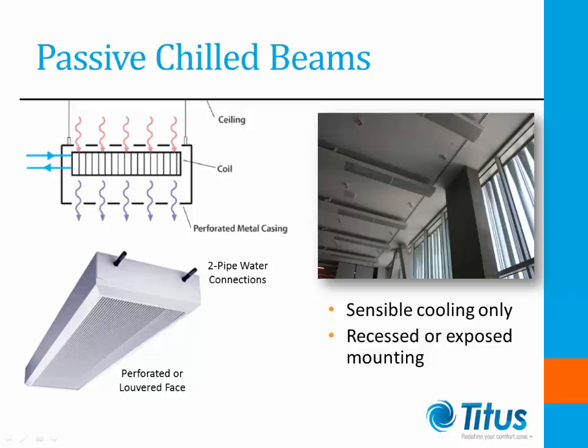There are a couple things about this coil that are different than what we normally associate with a convective cooling coil. First, the fin spacing is typically three to five fins per inch as opposed to twelve to fourteen fins per inch that we might see in an air handling unit. The reason for this is we want to create as little resistance for air passing through the coil as possible. Also, the chill water supplied to the beams is kept at or above the dew point temperature in the space. We want sensible cooling only — no latent cooling or condensation.